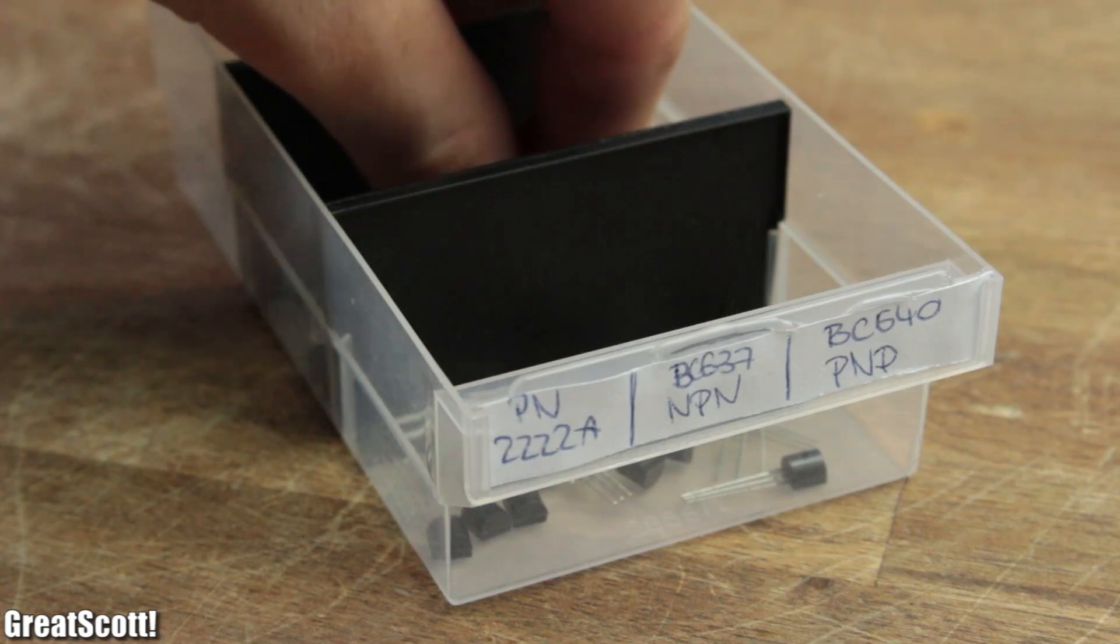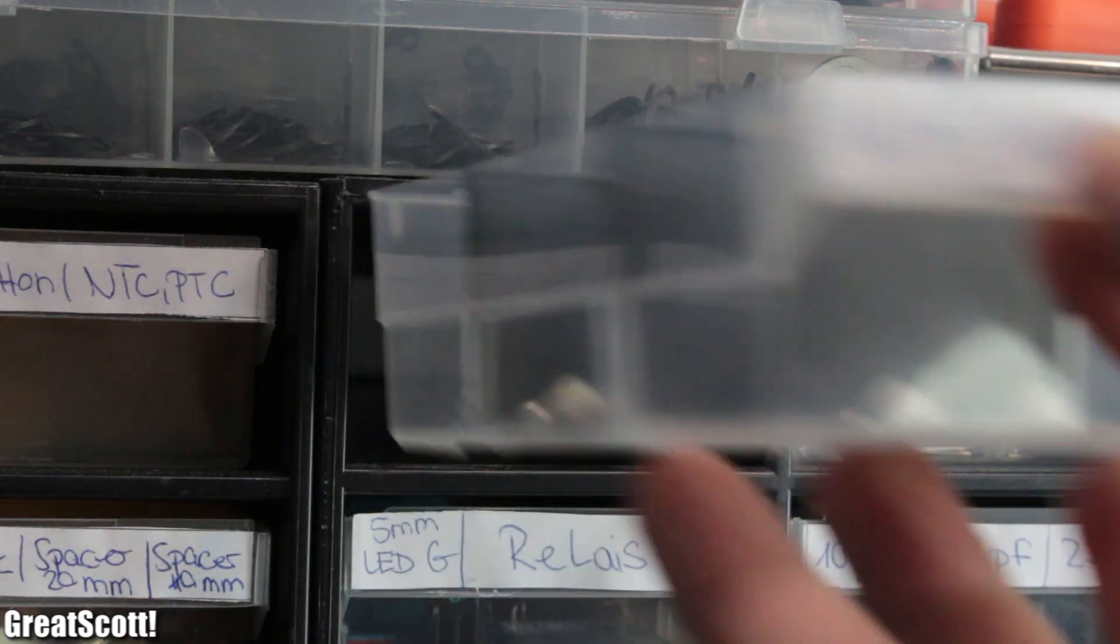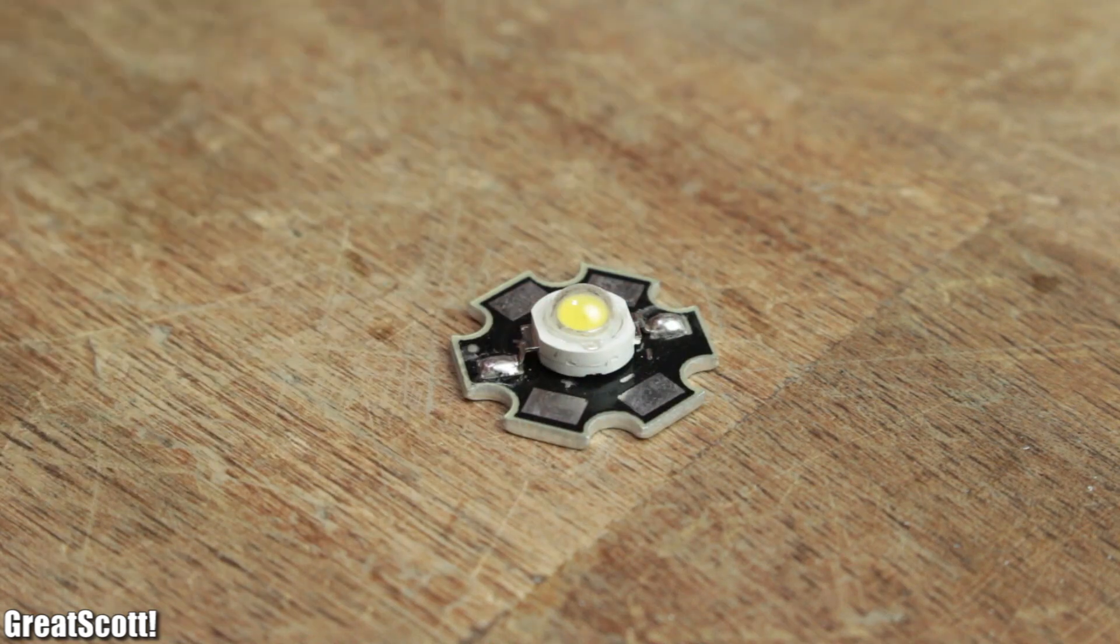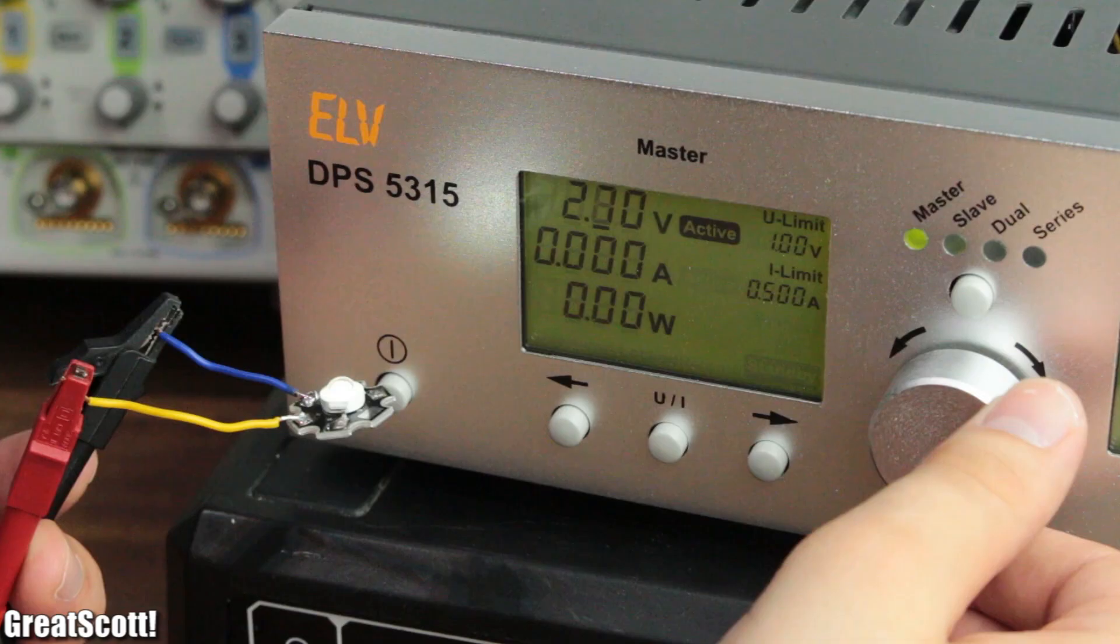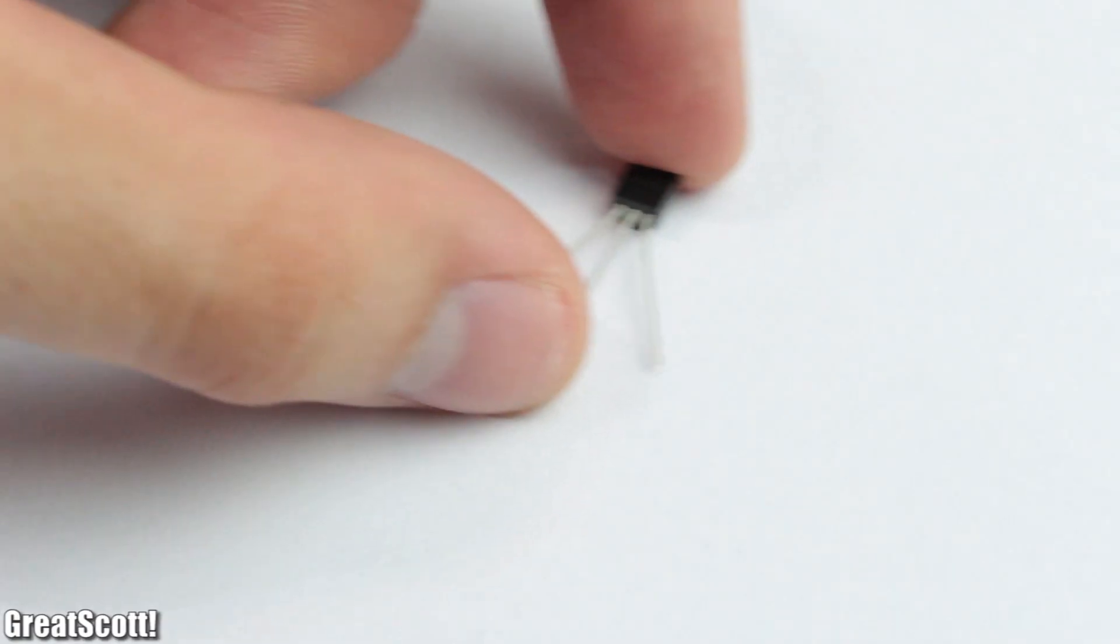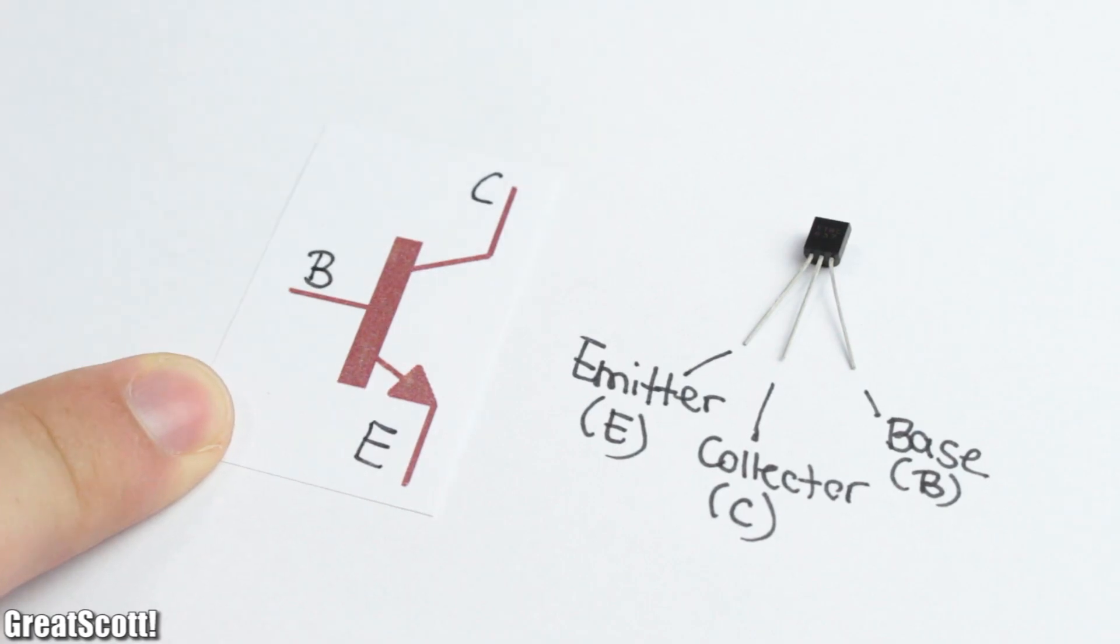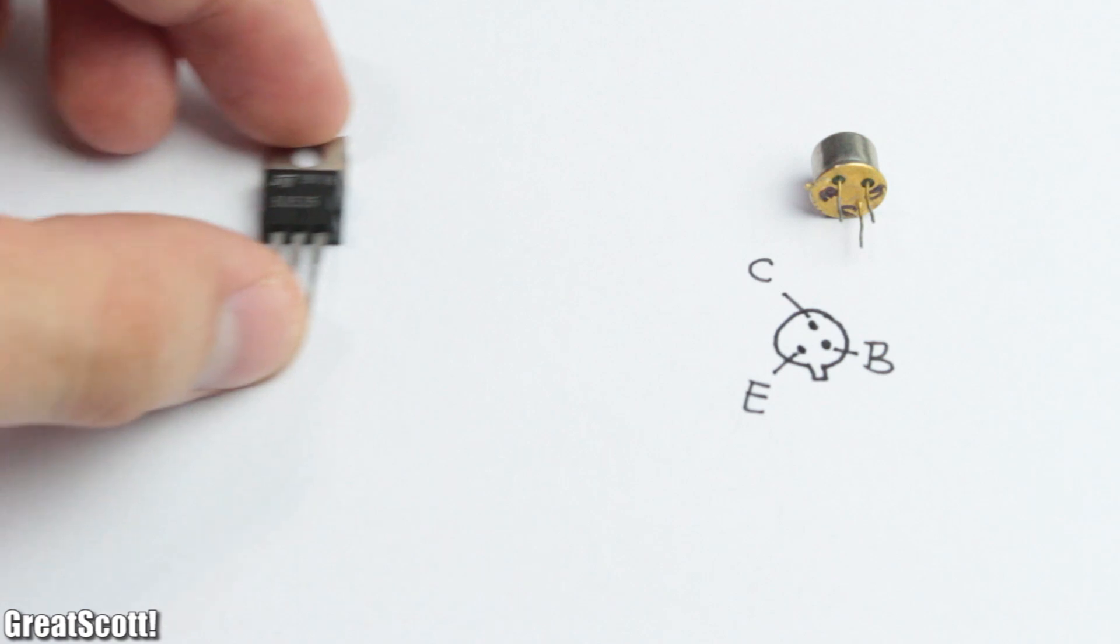First off, I grabbed my soon-to-be electric switch, the BC637 NPN BJT, and the load I want to turn on and off. In this case, a white 1-watt high power LED with a forward voltage of 3.1 volts. The three terminals of the transistor are called emitter, collector, and base.